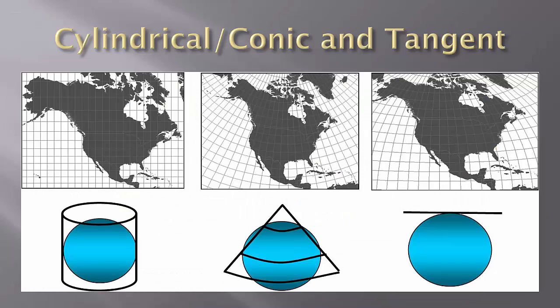Pictured here are three different types of projections and the images that they produce visually. On the furthest left is a cylinder. The center is a cone, which would be conic, and the last is tangent, where the Earth is depicted tangent to the line.